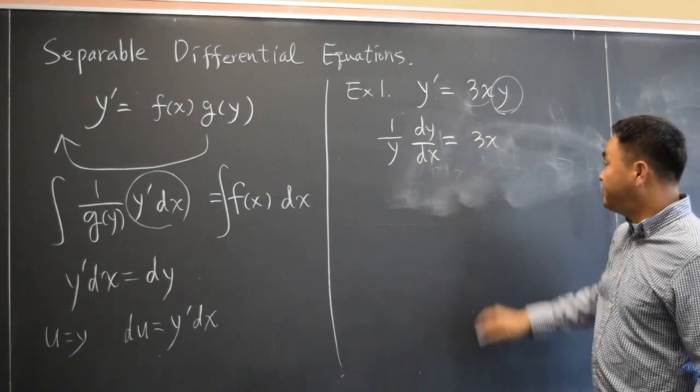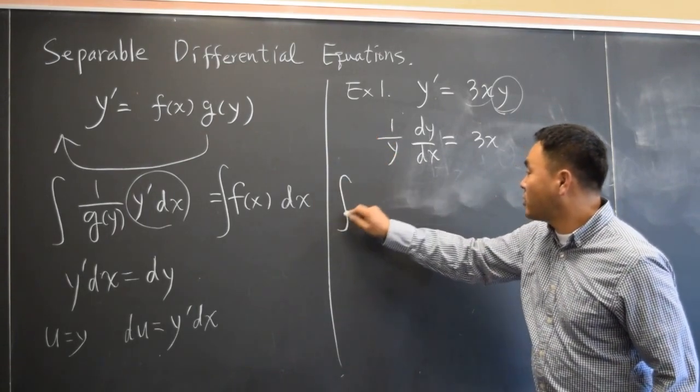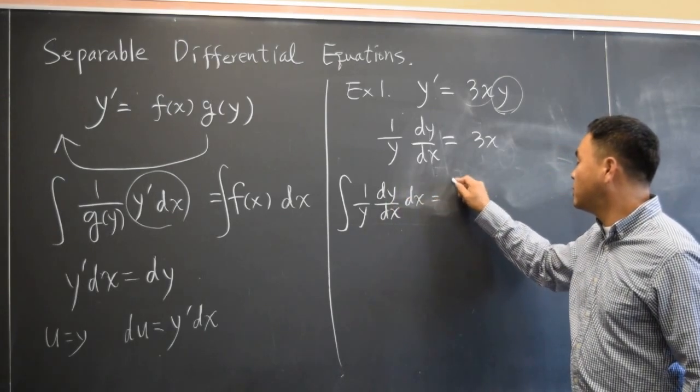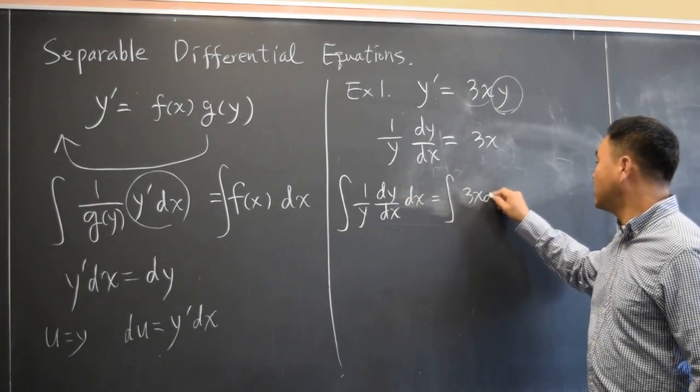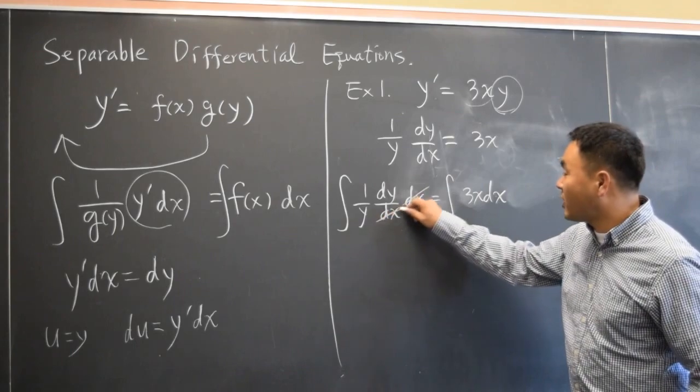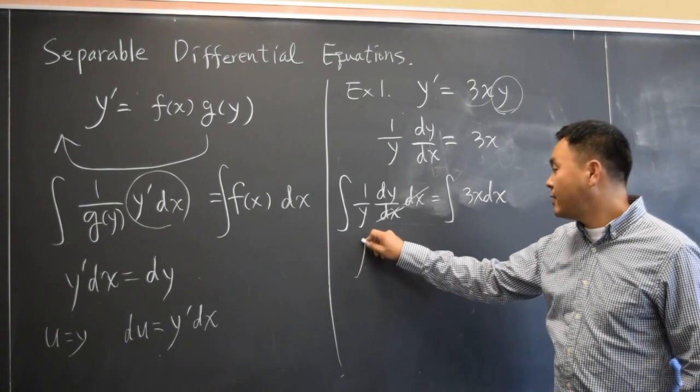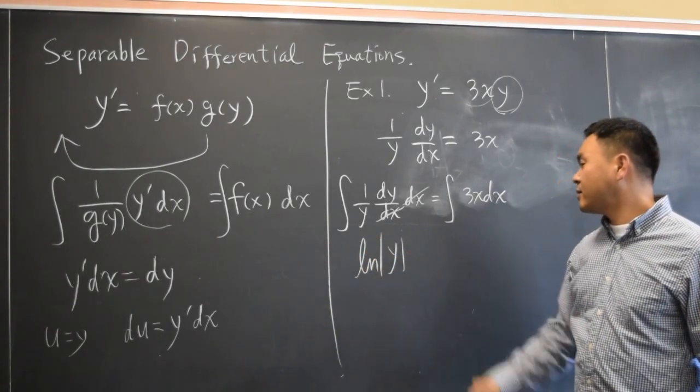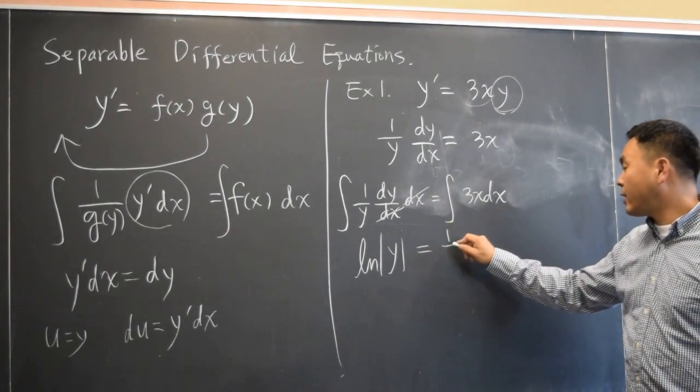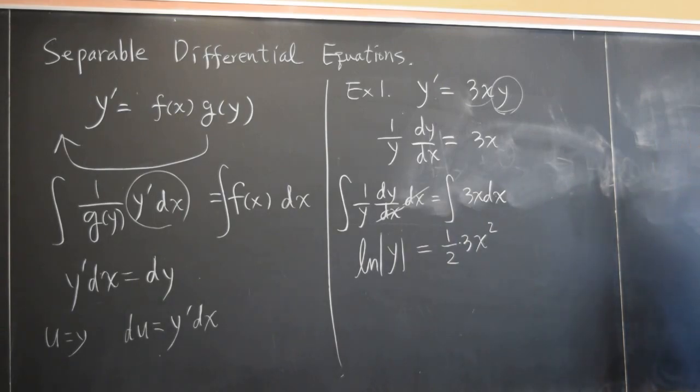And I have 3x. And then after that I integrate. Let's just integrate both sides. And you can readily see that dx dx cancels and you're just integrating 1 over y by dy. What is that? ln y. And that's equal to 3 over 2 x squared. Now you have to write plus c. But you only need to do it on one side.